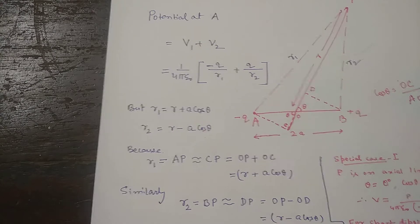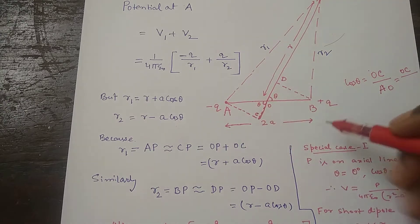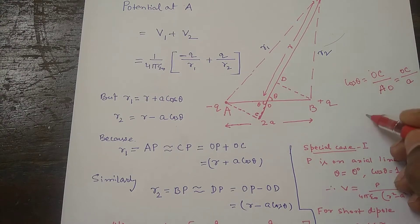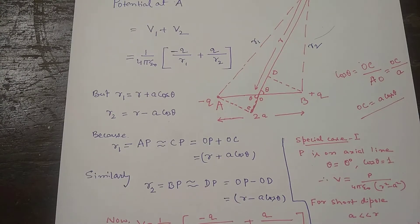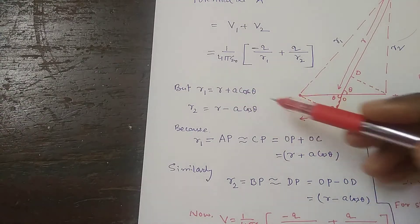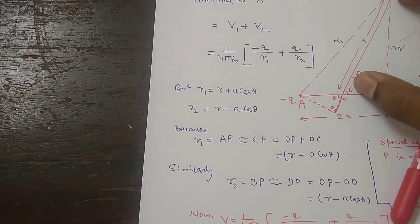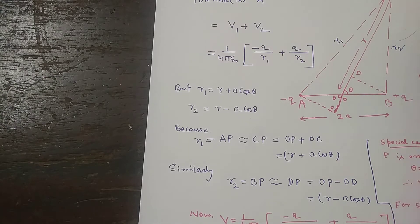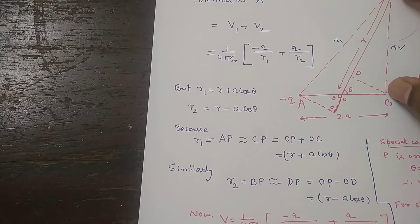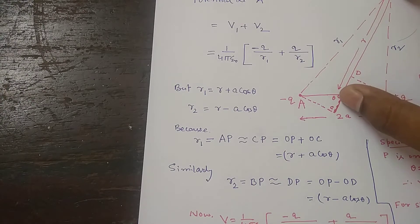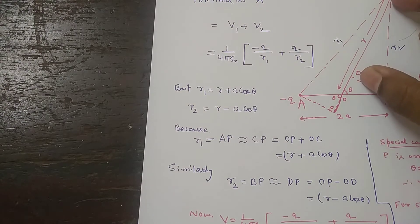Since the whole length is 2A, AO equals simply A. On cross multiplication, OC equals A cos theta. Therefore R1 equals R plus A cos theta, because this part is R and this part is A cos theta, giving the whole length as R plus A cos theta. Similarly, R2 is roughly equal to PD, and OD equals A cos theta, so R2 becomes R minus A cos theta.